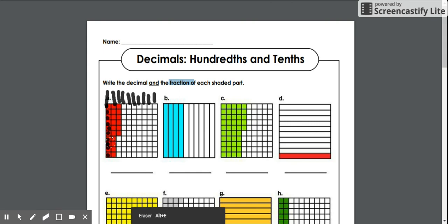Alright, what it's asking for is the shaded part. So the shaded part, if I know it's by tens, I can count: 10, 20, 21, 22, 23, 24, 25, 26.